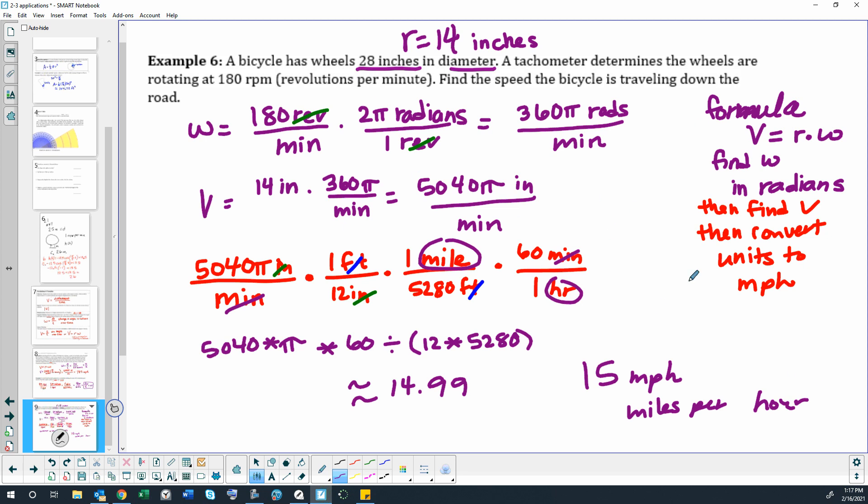I used formulas, I used conversions. So I converted revolutions to radians, I used my velocity formula to change this from angular velocity to linear velocity, and then I used conversions between inches to feet, feet to miles, and then minutes to hours to change our inches per minute to miles per hour.